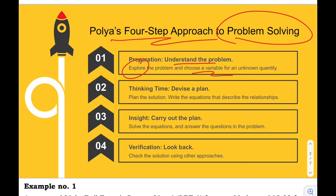In step one, we choose a variable for an unknown quantity. Commonly, we use x. Step two: plan the solution. In this step, we will devise a plan then write the equations that describe the relationships between or among the variables involved.